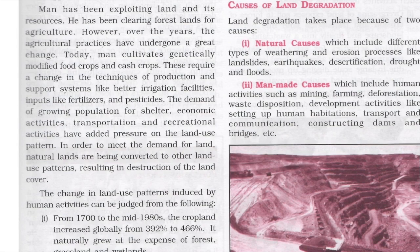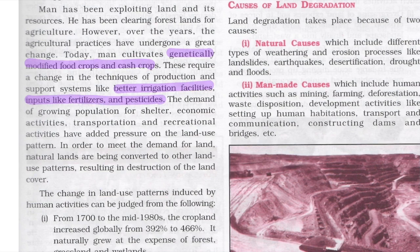Man has been exploiting land and its resources by clearing forest lands for agriculture, leading to a shortage of land. Agricultural practices have undergone change — today man cultivates genetically modified food crops and cash crops, which require changes in production techniques and support systems like better irrigation facilities, fertilizers, and pesticides.